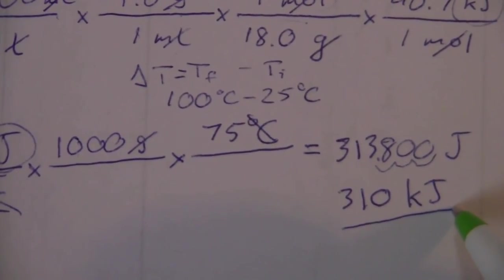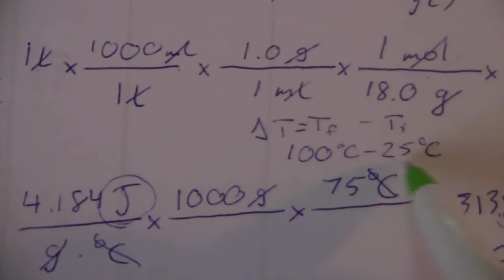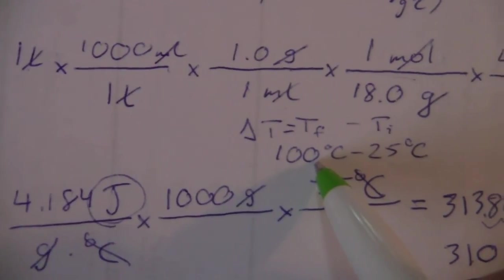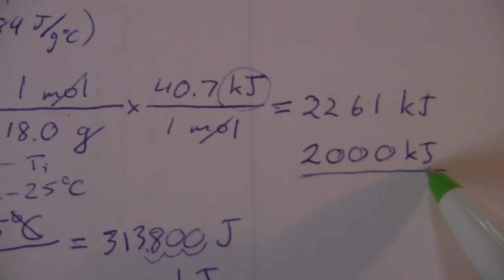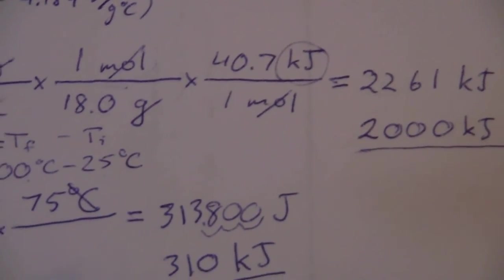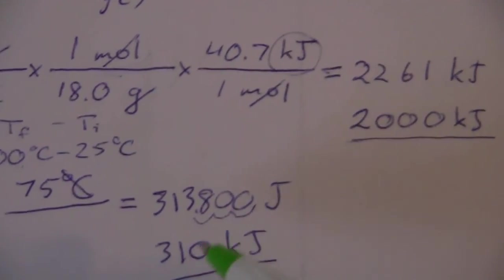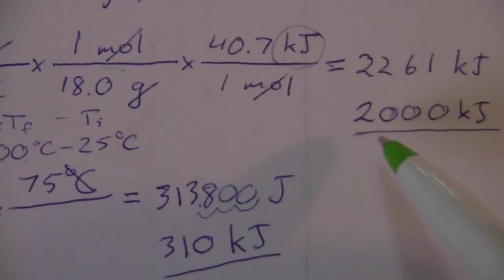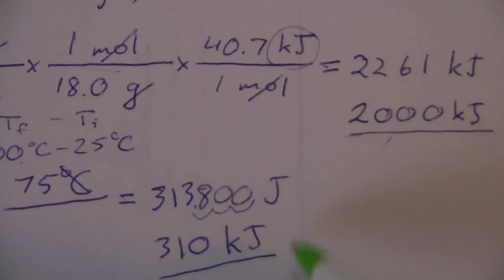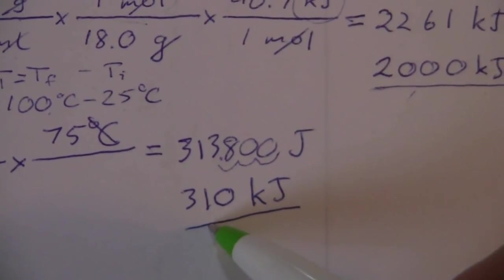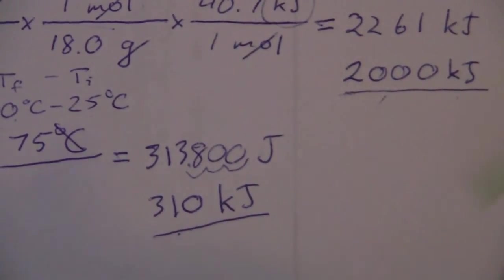So it takes 310 kilojoules to raise its temperature from room temperature to boiling, and it takes 2,000 kilojoules or more to boil away the one liter of water. So you can see it takes a significant amount more energy to boil it away than it does to increase it to its boiling point, and that's the point that I wanted to make there.